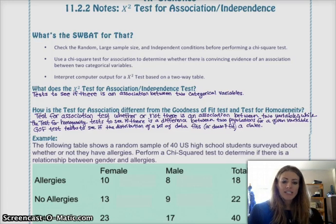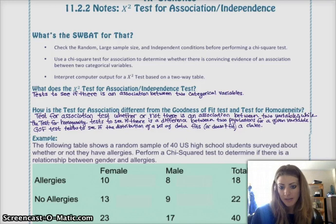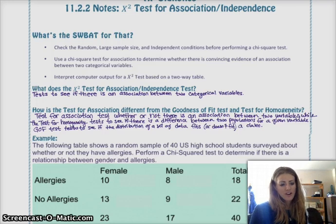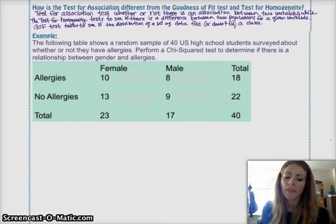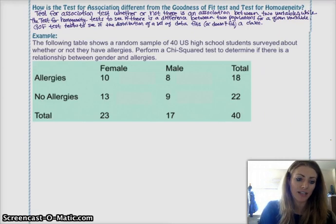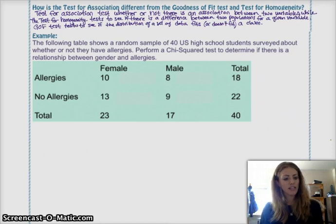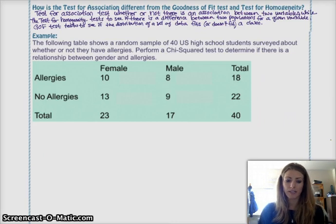All right. So, we're going to move on to the example. We have the following table. It shows a random sample of 40 U.S. high school students surveyed whether or not they have allergies. Perform a chi-squared test to determine if there's a relationship between gender and allergies. So, you have your sample data here, and you have this is all your observed data, right? And we just need to perform a test. One of the first things that you need to do to perform a test is find your expected values, right?